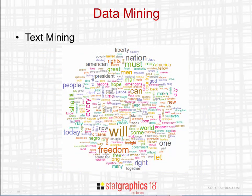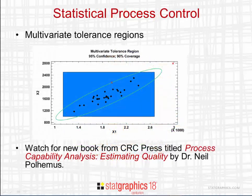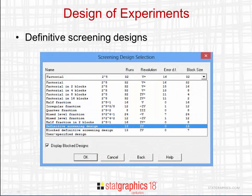We've added a text mining procedure which will go through a set of documents, look at the text, and create a word cloud showing which words are used most often. A number of new procedures have been added for statistical process control, including the multivariate tolerance region, which creates a statistical tolerance region for two or more variables. You should also watch for the new book from CRC Press titled 'Process Capability Analysis: Estimating Quality,' which describes a lot of the new StatGraphics 18 SPC procedures. We've also added definitive screening designs to the DOE wizard, which allow you to estimate models involving both main effects and quadratic effects in a small number of runs.